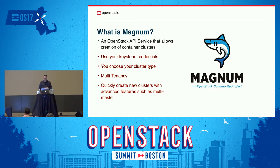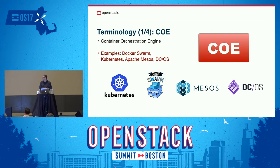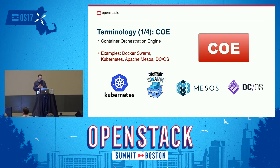Before I get too far into it, I need to define a couple of terms I'm going to use during this talk. The first is COE — a Container Orchestration Engine. Magnum supports a variety of these today, including Docker Swarm, Kubernetes, Apache Mesos, and DCOS.